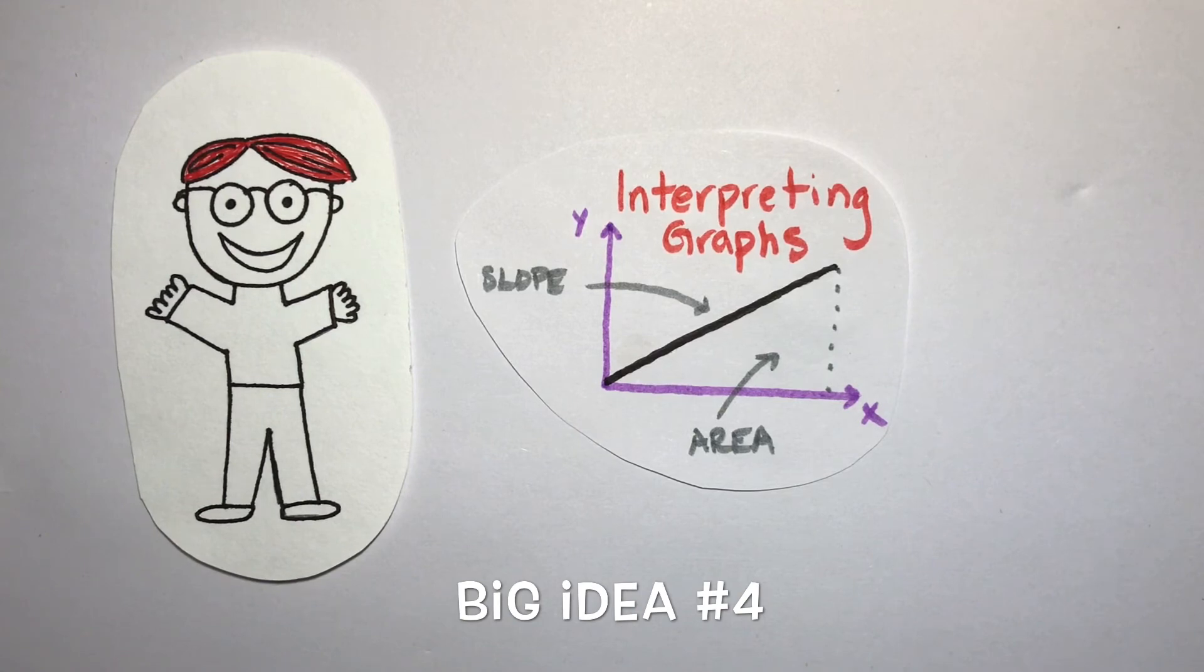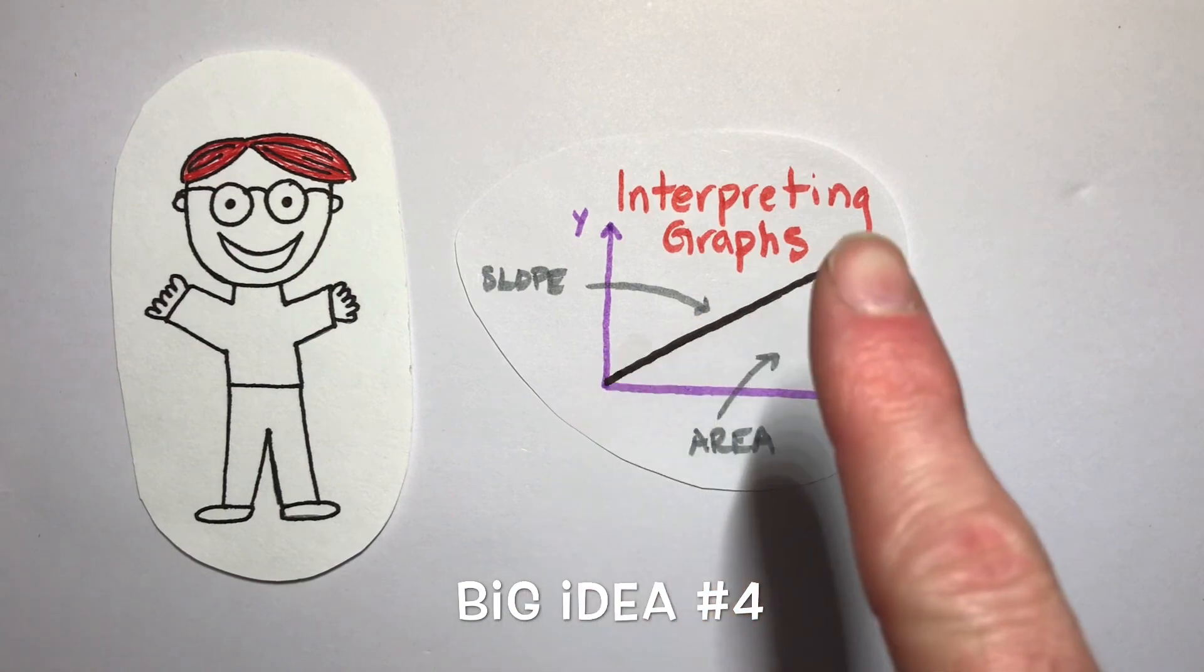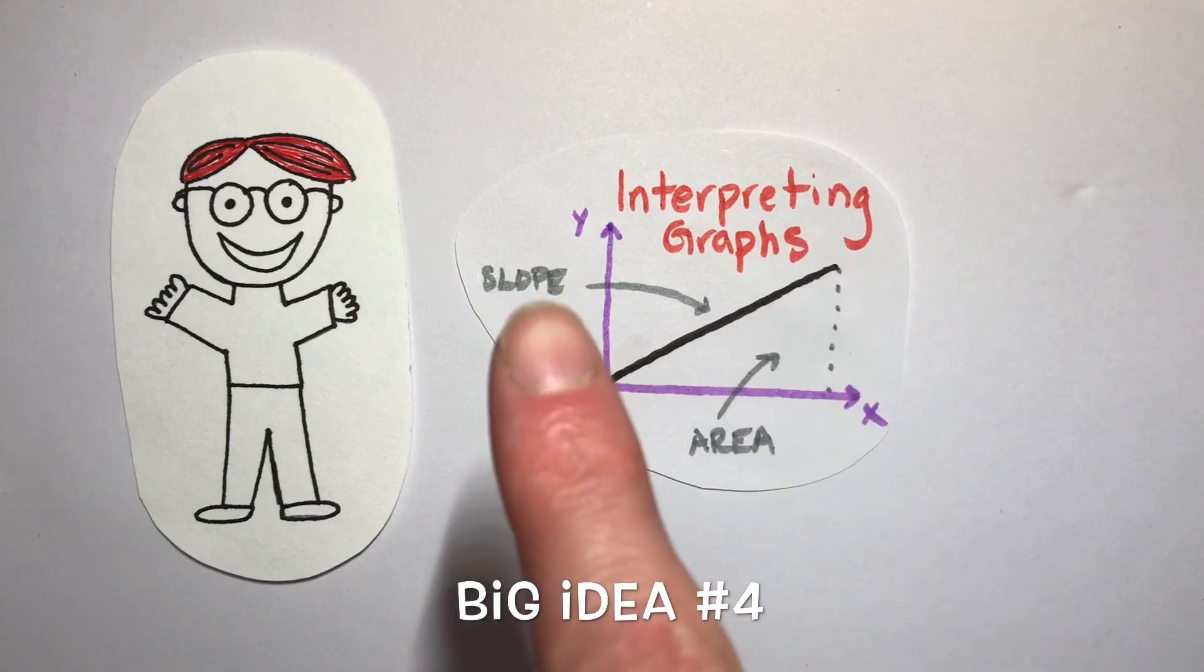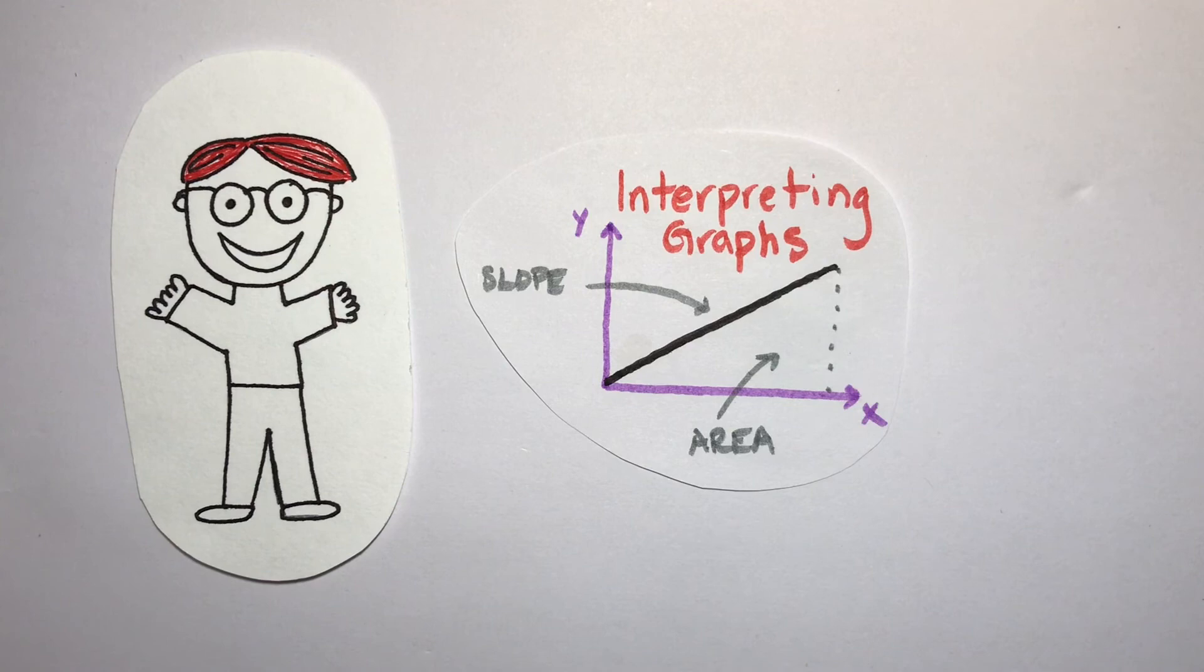The second important consideration when interpreting graphs is the area under the curve. Many graphs that you look at, this area is going to give an important quantity just like the slope did. Again, for example, in a velocity time graph, the area under the curve gives us the displacement. Always remember that when doing a lab, graphs give us a lot of information, and if you have to analyze the relationship between a couple variables, the slope and the area of those graphs might provide us important information.